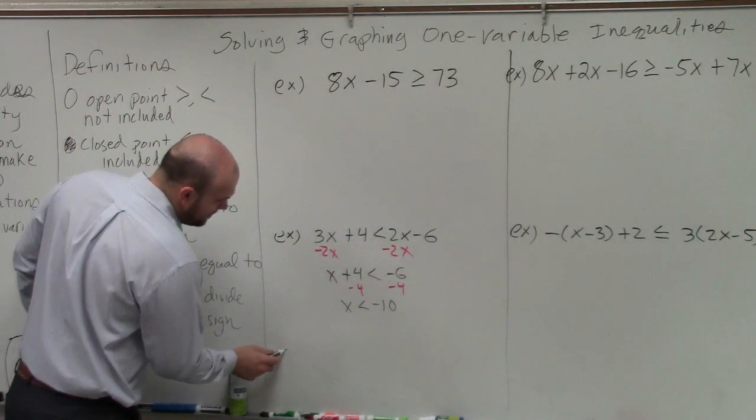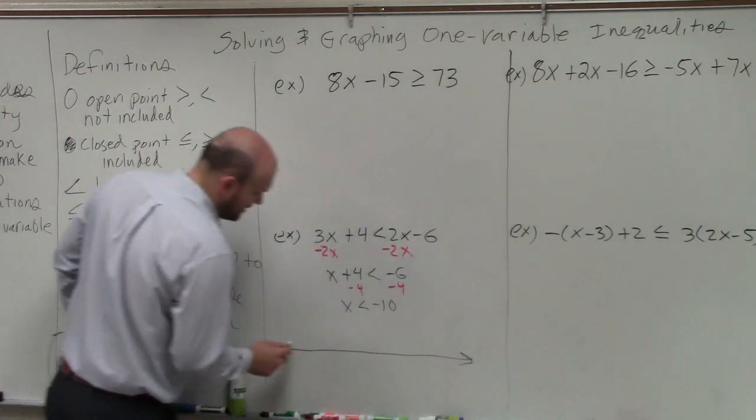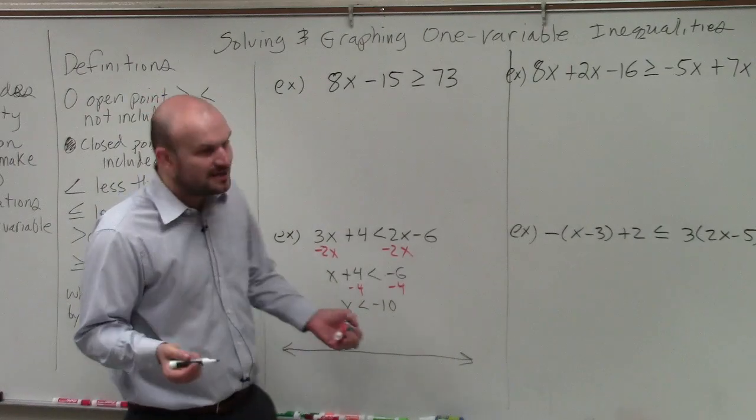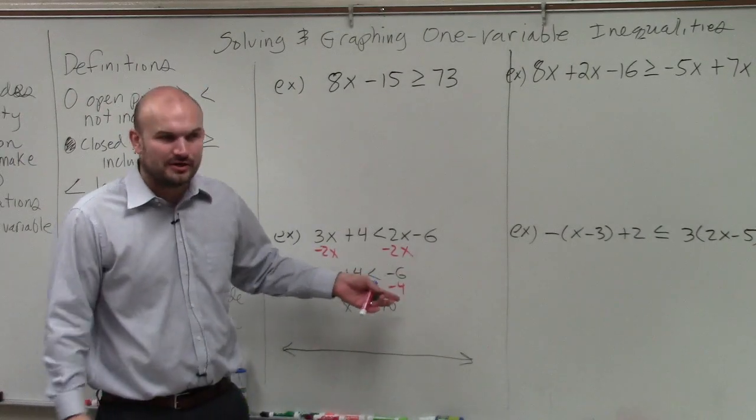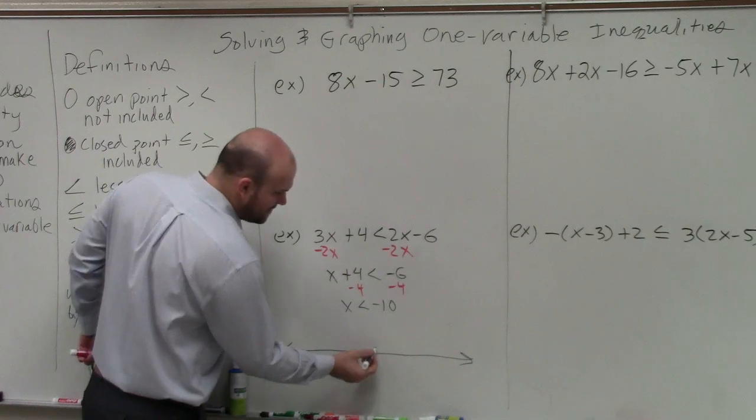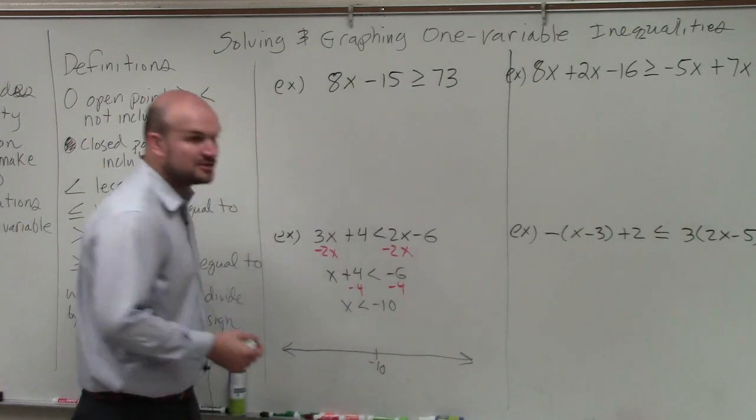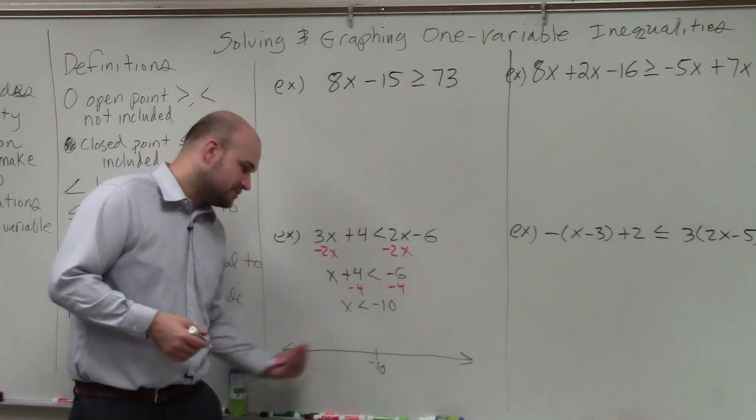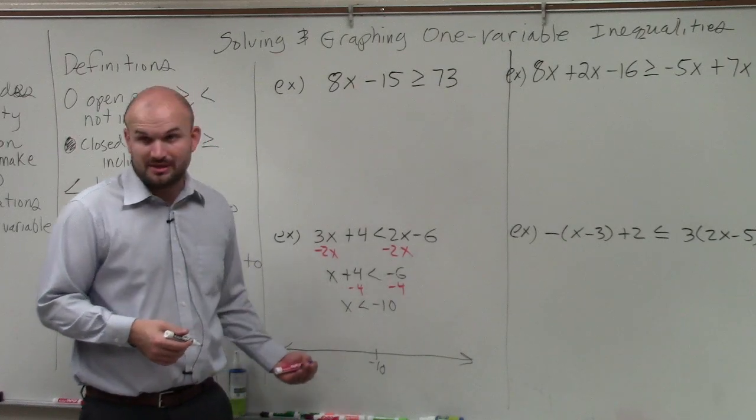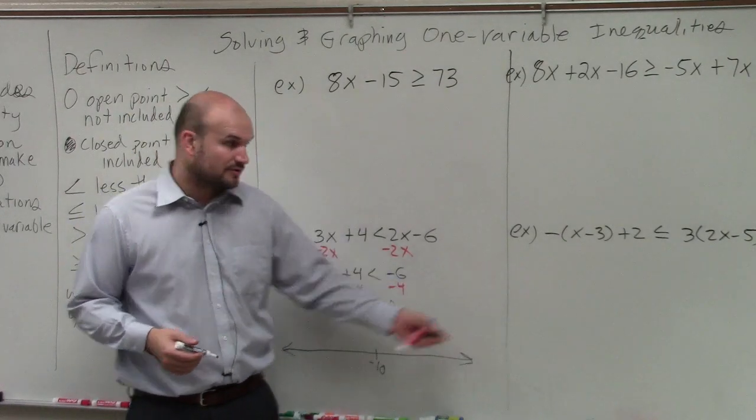So when you're creating your number line, a lot of students always like to start number lines with 0. Well, that could be helpful. But what if this was like negative 100? We don't want to go all the way. So my recommendation is to start at your solution point. Then choose values to the left, which are going to be less than, and choose values to the right, which would be greater than.